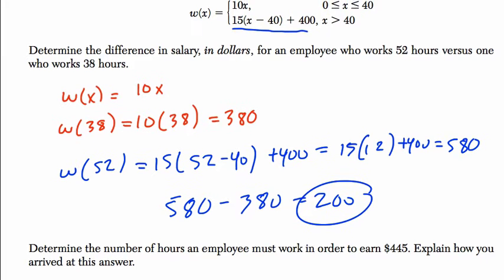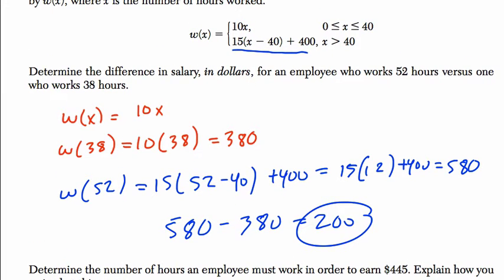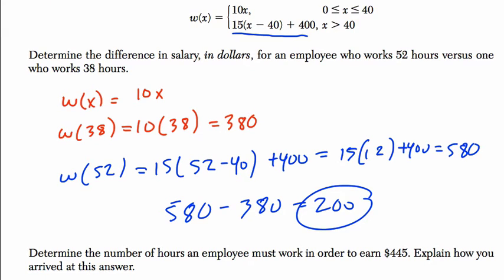Alright, so we're trying to earn $445. I'm just going to notice that that amount of money is between 380 and 580. So the number of hours you have to work, well, what does that mean? Well, if you're working more than 40 hours, you fall into the second category here.